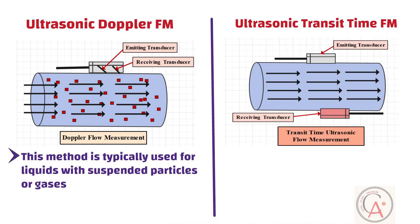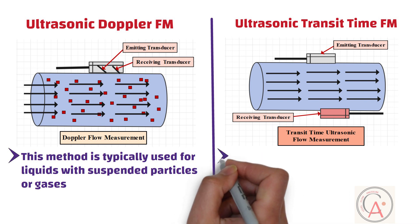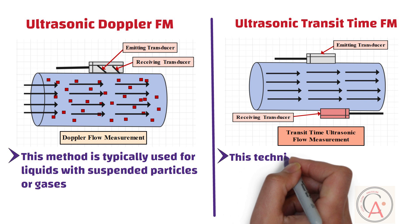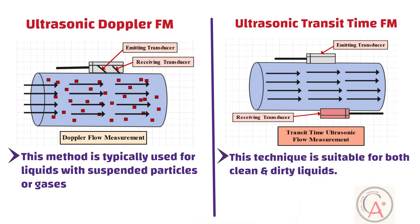On the other side, the ultrasonic transit time measurement method measures the velocity of a fluid by sending ultrasonic pulses in the direction of flow and against the flow. The time it takes for the pulses to travel downstream and upstream is measured, and the difference in transit times is proportional to the flow velocity. This technique is suitable for both clean and dirty liquids.